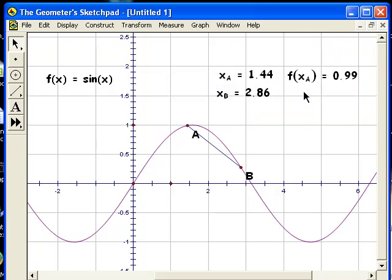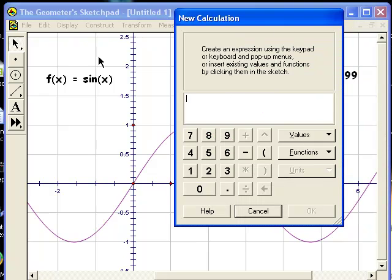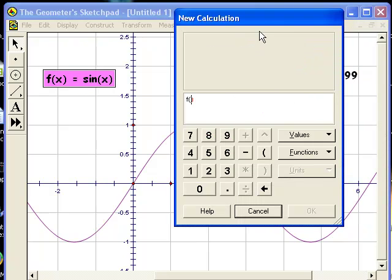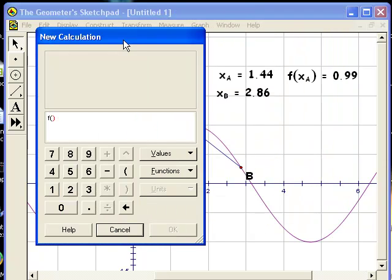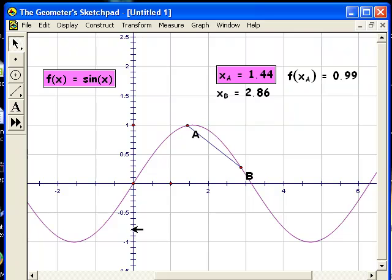Next, I calculated the value of the function at each of those x-coordinates. I can just do that using the calculate menu and say, I want to calculate f at that value, which I've already done.